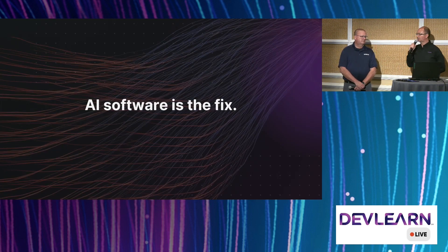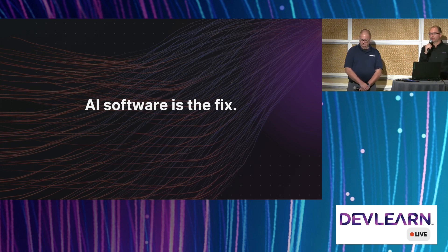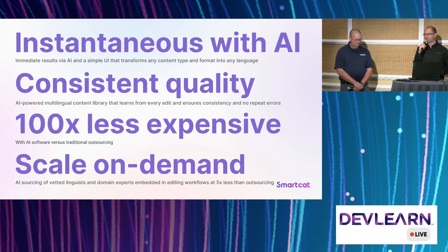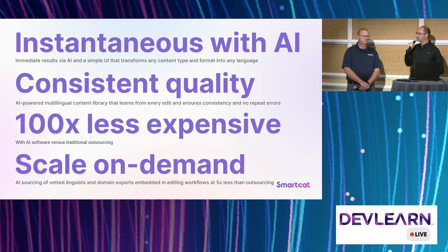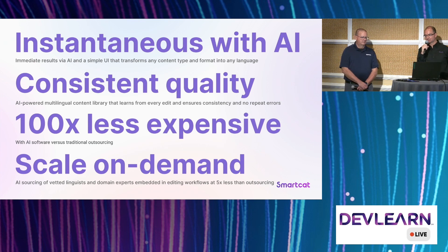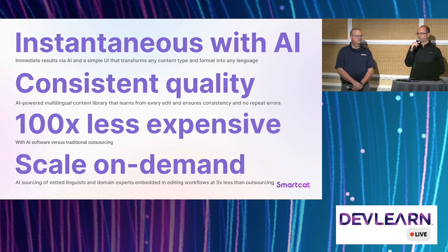So what's the solution? If the outsource model is broken, the fix is AI software. What that means is instantaneous, immediate results by AI, and in the case of SmartCat, a UI that anyone can use — no special training or skills required. Number two: consistent quality. This is super important, especially when it comes to repeat errors. We have an AI-powered multilingual content library that learns from every edit your team makes, meaning there are no repeat errors, and everything is on-brand, using your terminology, your voice, your tone.